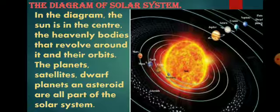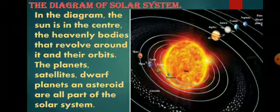Starting from the sun: Mercury, Venus, Earth, Mars, Jupiter, Saturn, Uranus, and Neptune. Then the dwarf planet Pluto, and also the satellites and the asteroids. These all are parts of the solar system.